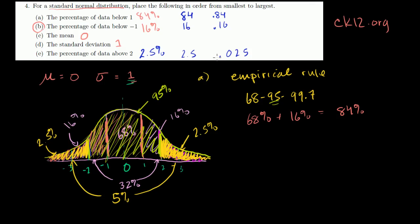If we go with decimals, from smallest to largest: C is 0 (the mean), then E is 0.025, then B is 0.16, then A is 0.84, and then the largest is D, the standard deviation, which is 1. The order is C, E, B, A, D. If you had a question like this on the exam, clarify with the teacher whether they want percentages or decimals. Hopefully you found this useful.